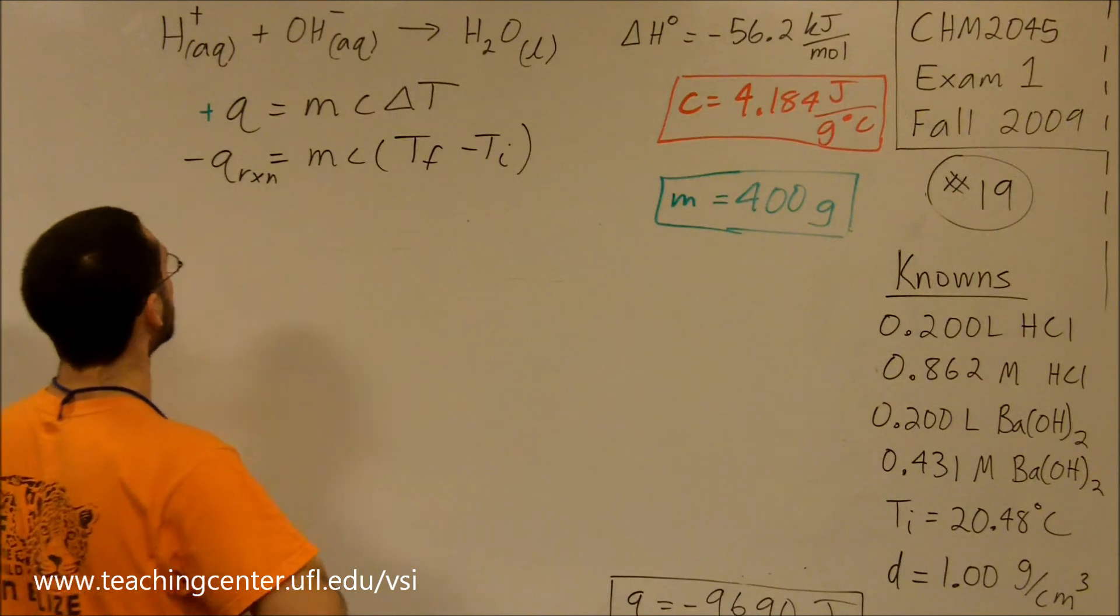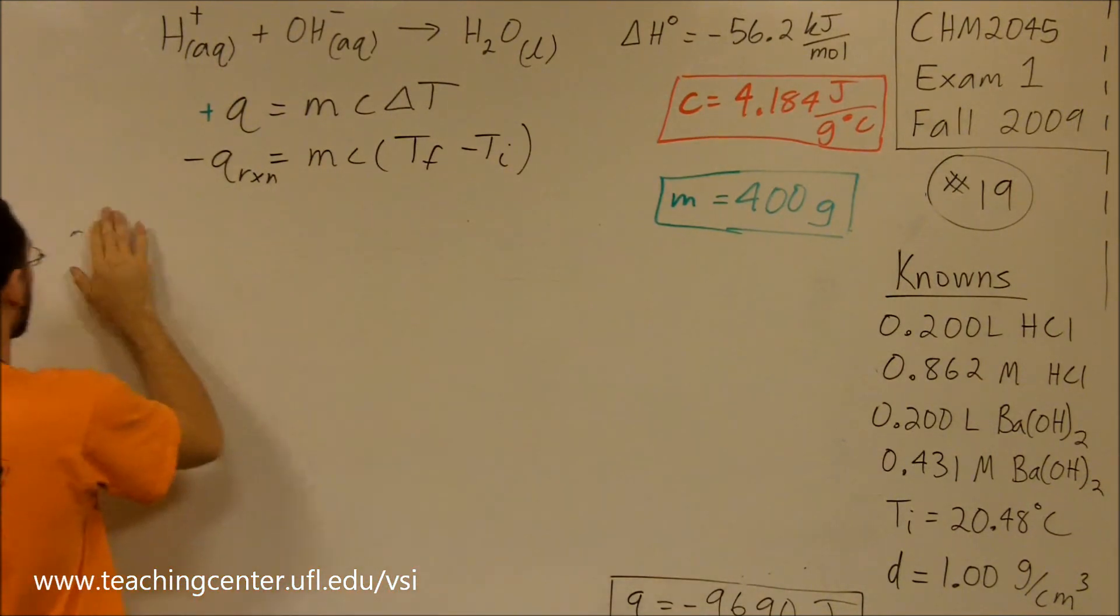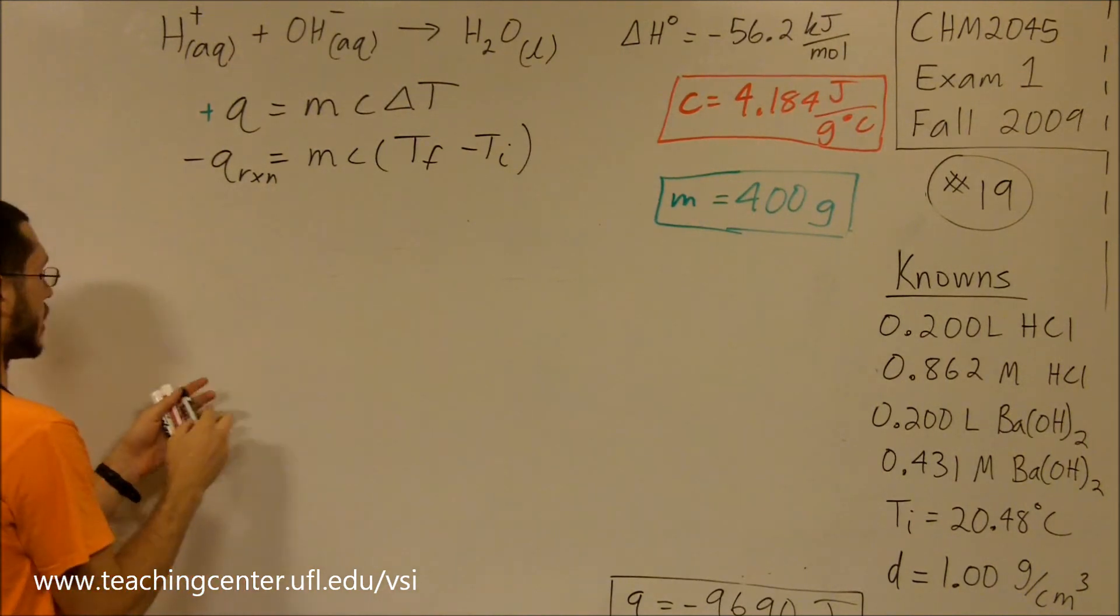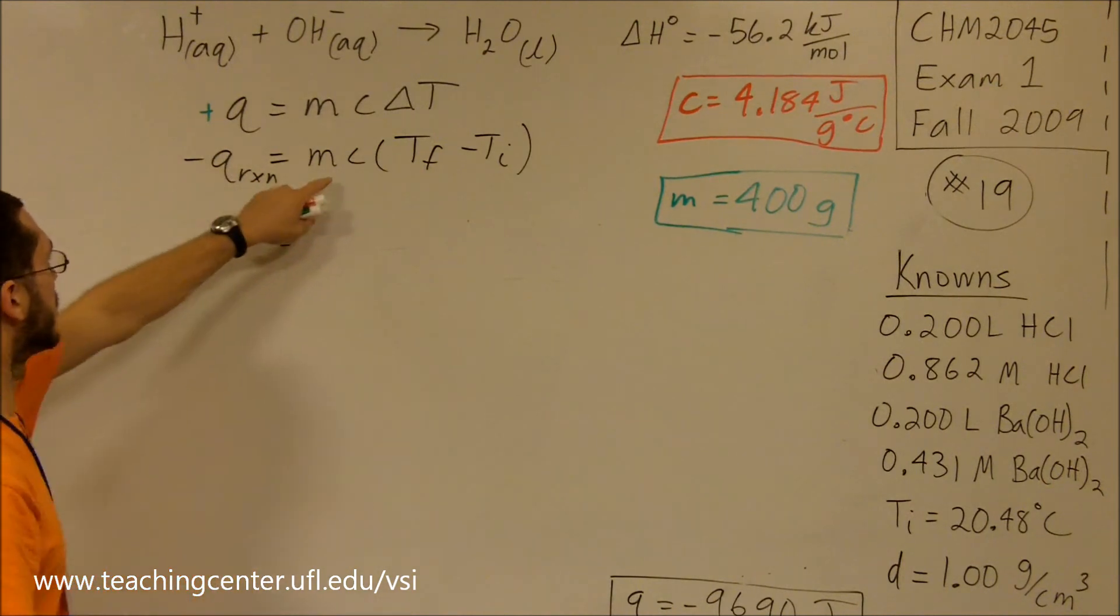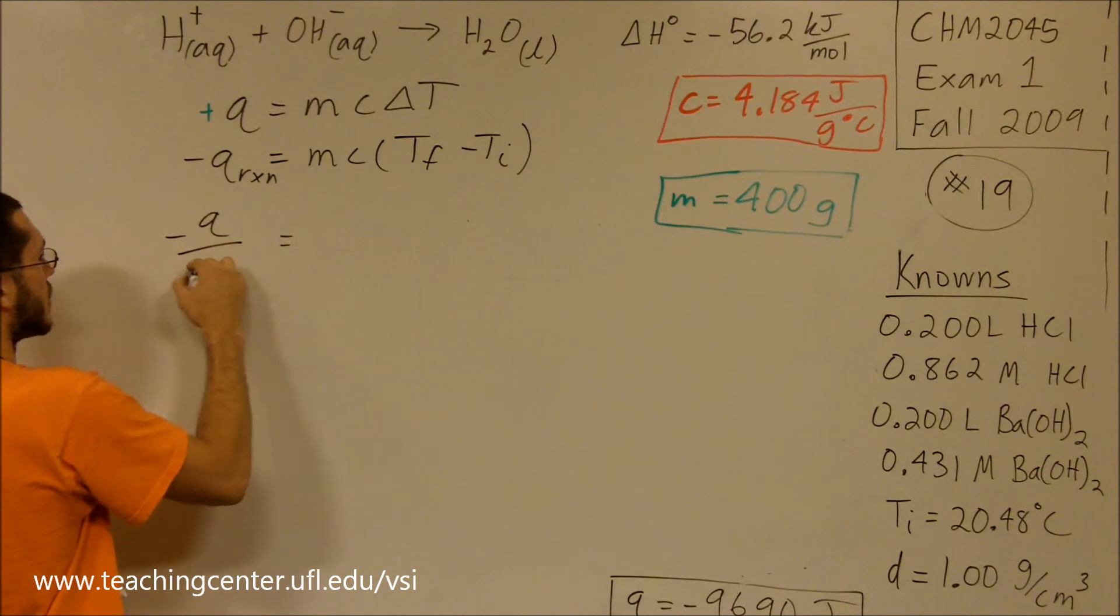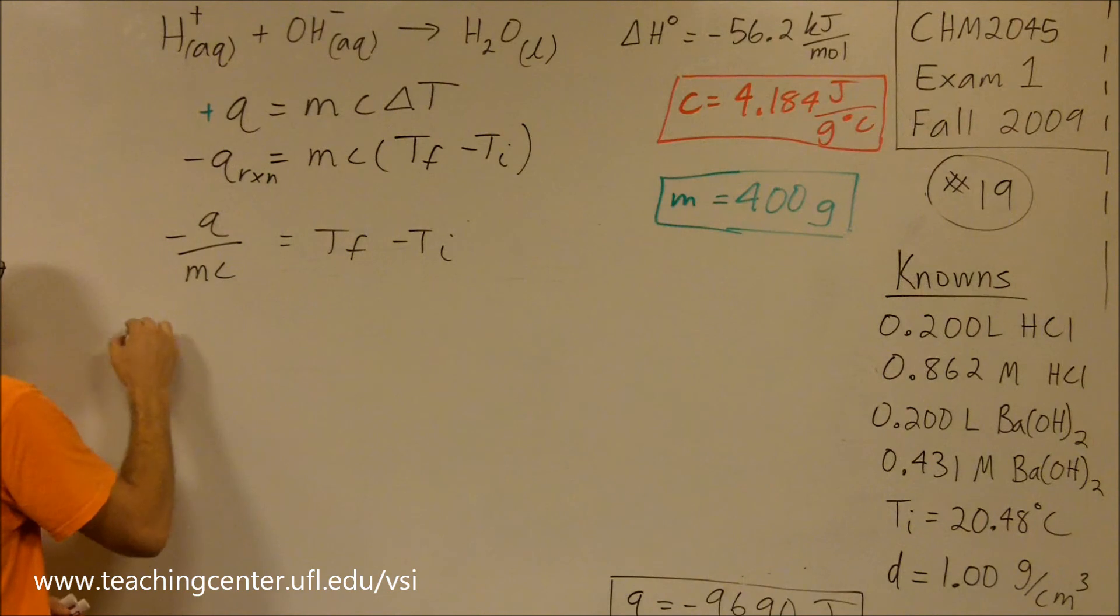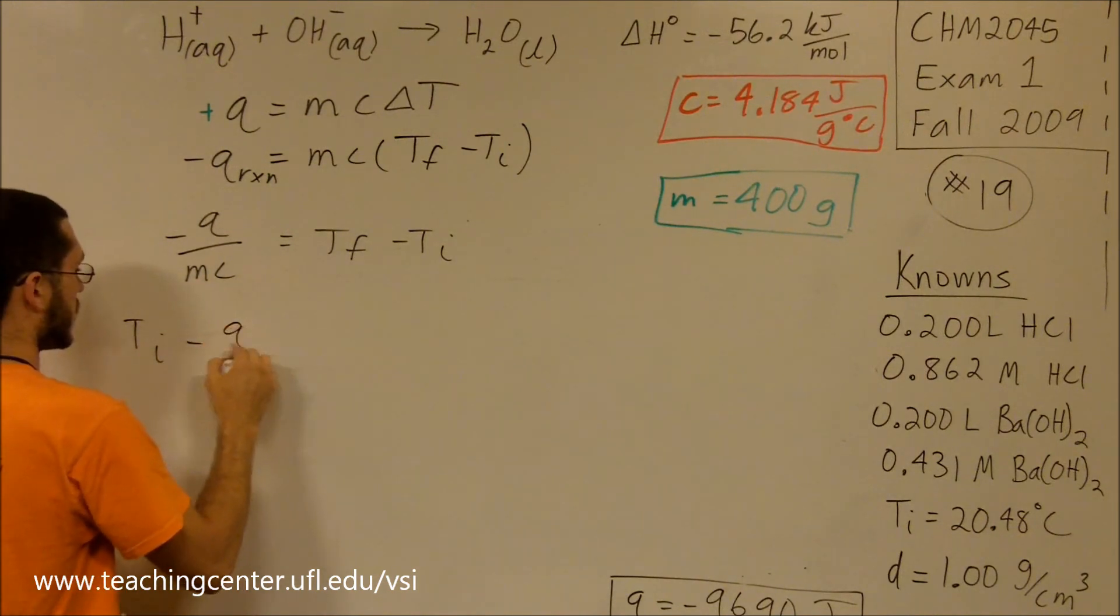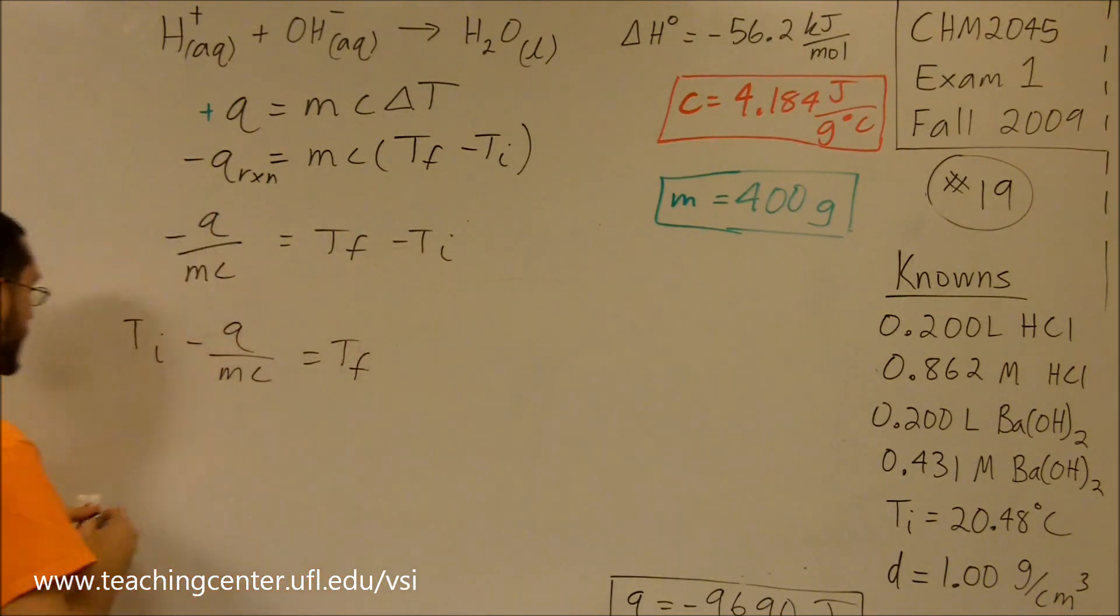We have Q, we have m, we have c, and we have temperature initial given in the problem. Therefore, we can solve this equation. What I'm going to do is divide both sides by m and c, and then add the temperature initial over. I'm just going to plug in my values.